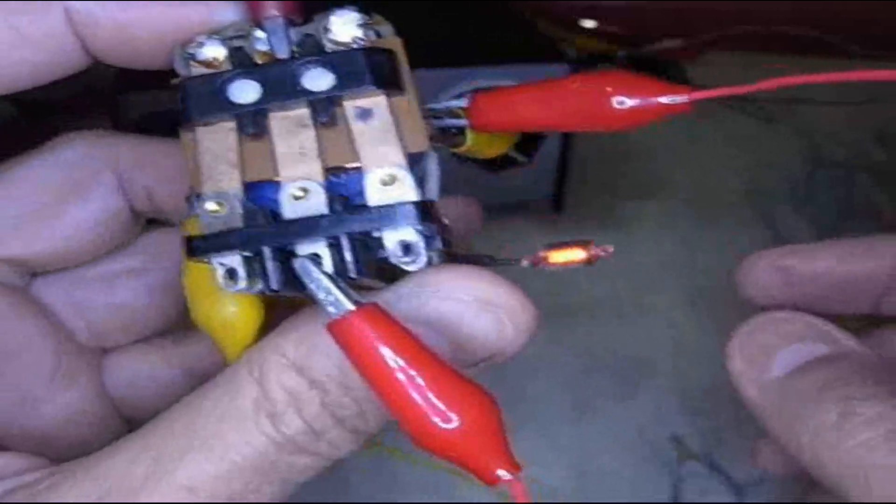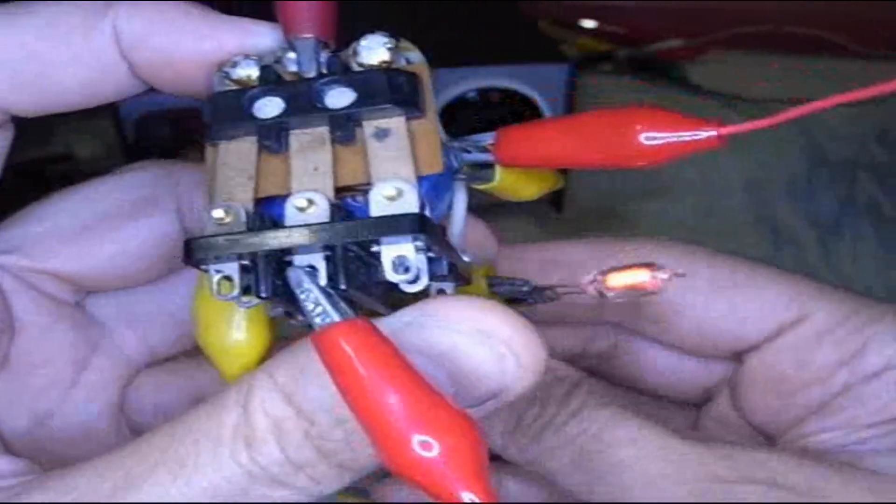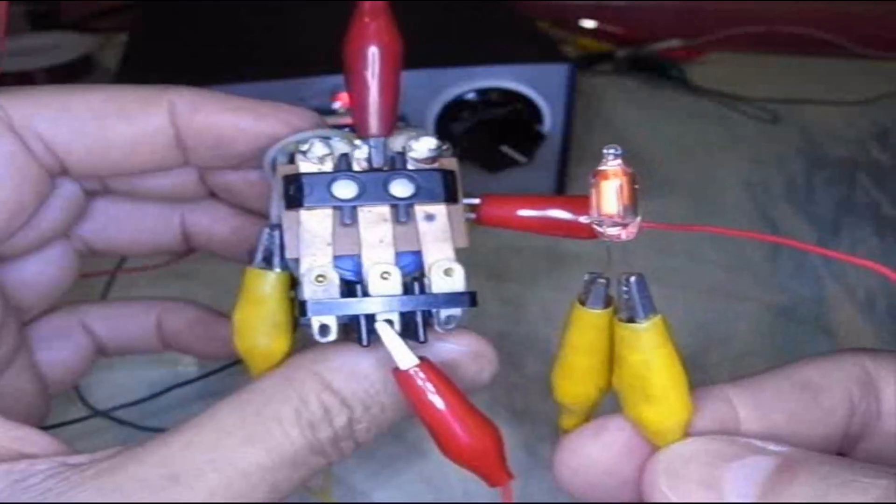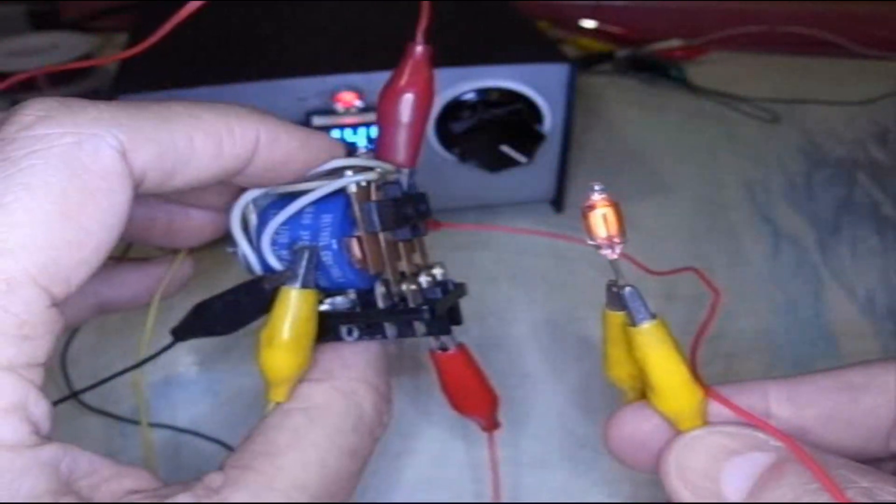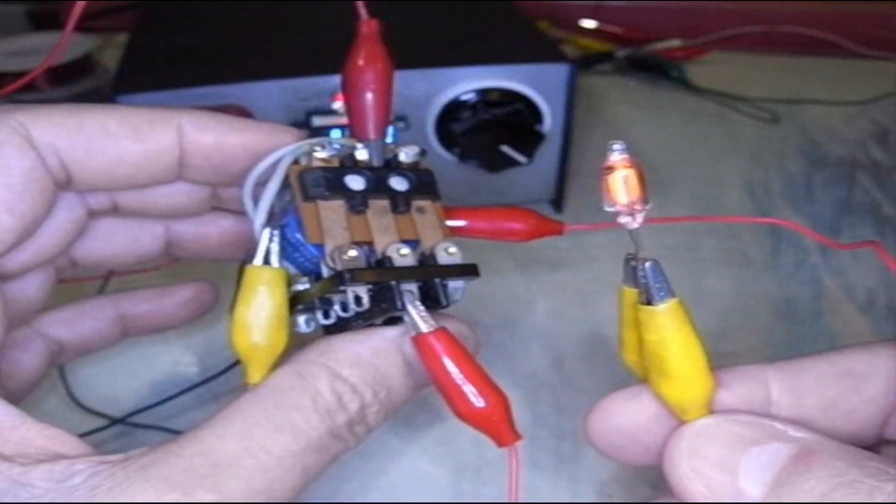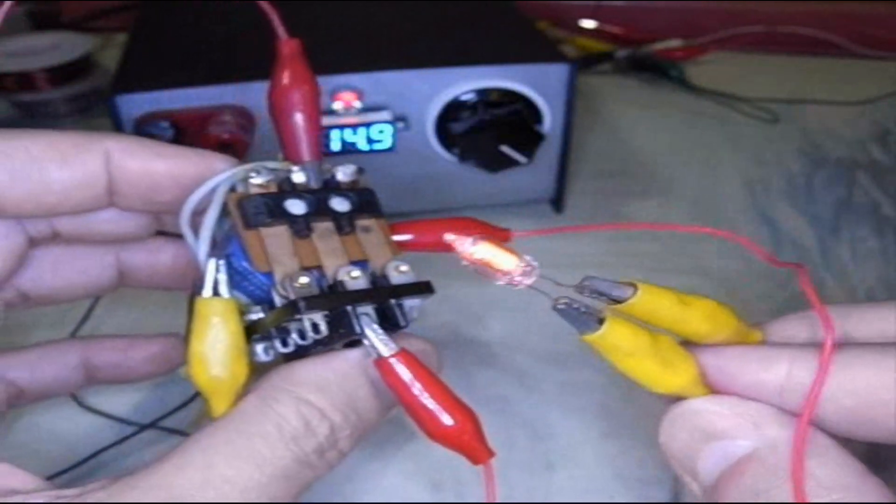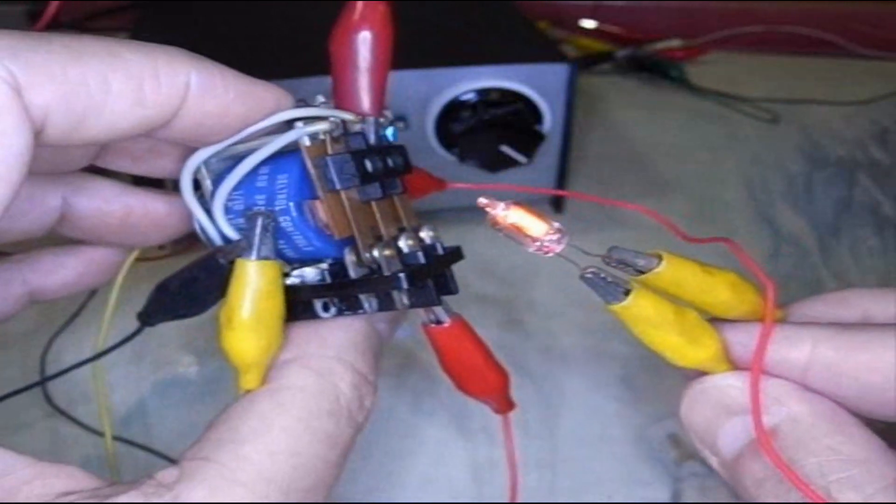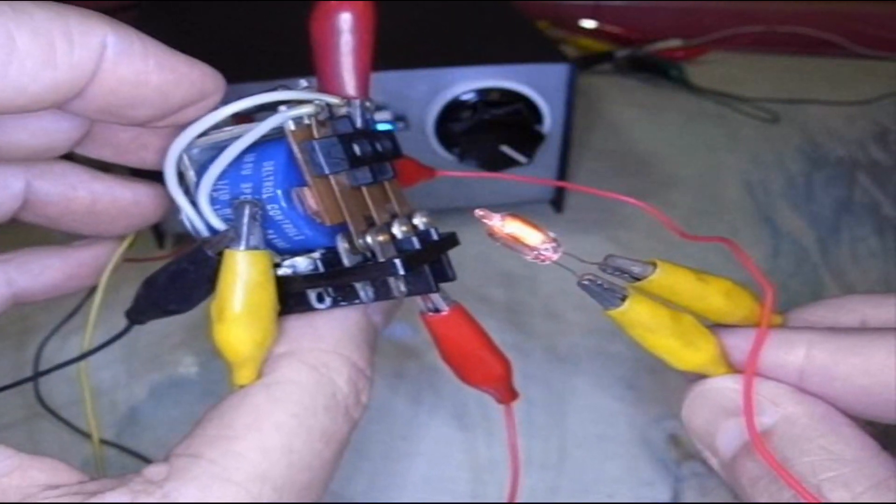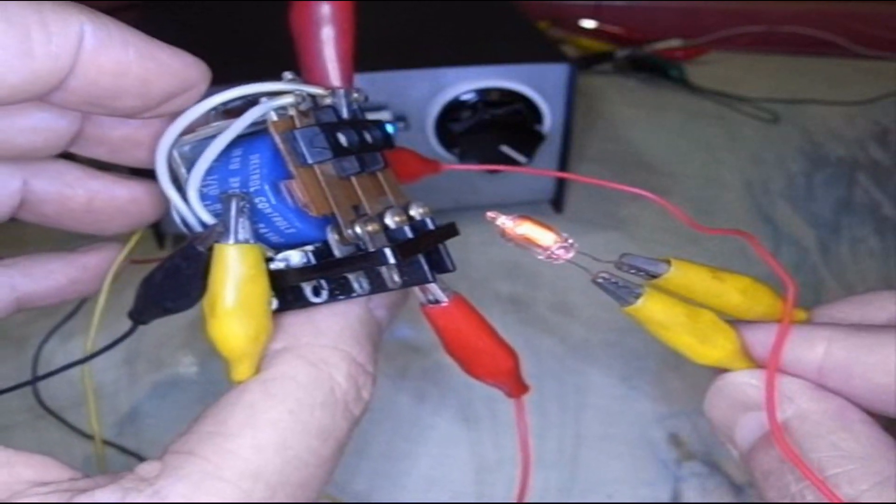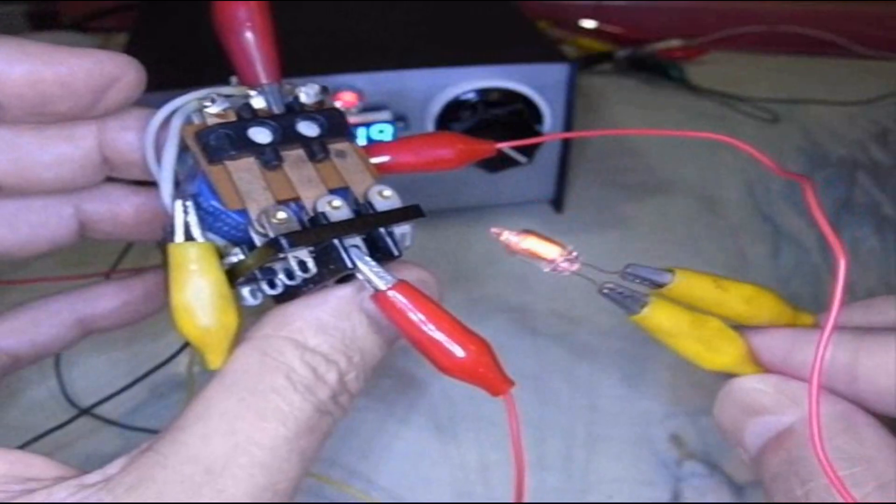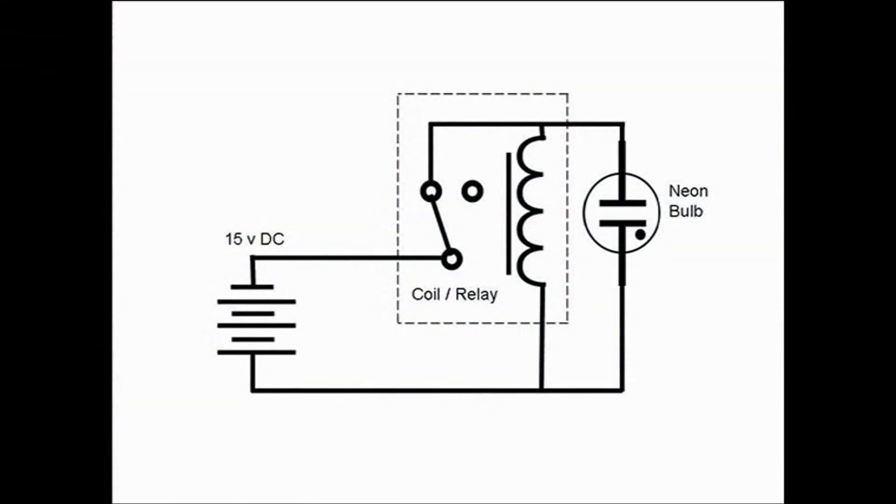And there we have it. We have a mechanical version of a joule thief. Driving a neon bulb. 30 to 70 volt neon bulb. With 14.9 volts. So yes. You can have a mechanical joule thief. Hope you found it interesting. All right.